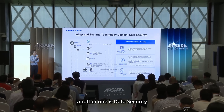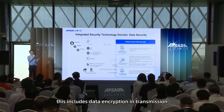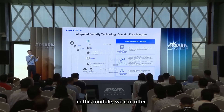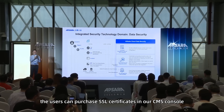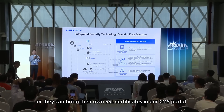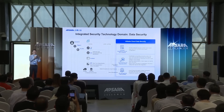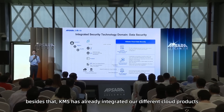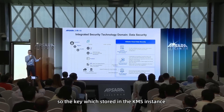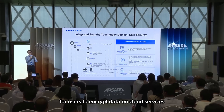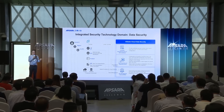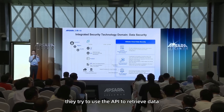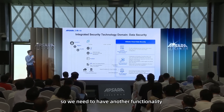In terms of data security, this includes data encryption in transmission, data encryption at rest, and data detection response. Users can purchase SSL certificates in our CMS console or bring their own SSL certificates and configure traffic encryption. KMS is already integrated with different cloud products so that keys stored in KMS instances can be used to encrypt data on cloud surfaces. However, this is not enough — if a staff member with an access key tries to use an API to retrieve data, this is invisible to traditional controls.